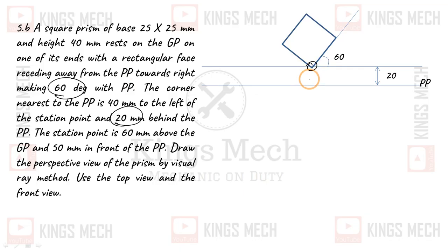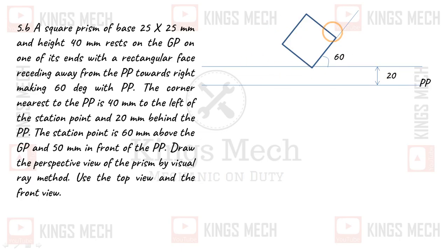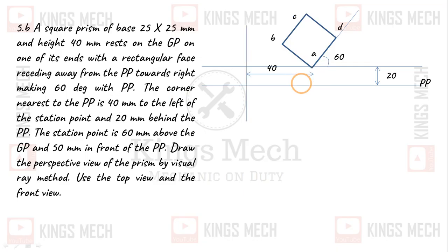The prism is resting on one of its corners, 25mm behind VP. The corner nearest to the picture plane is 40mm to the left of the station point. The corners are labeled ABCD, and the corner is at 40mm distance from the station point.